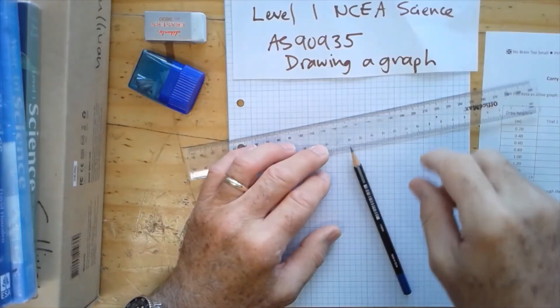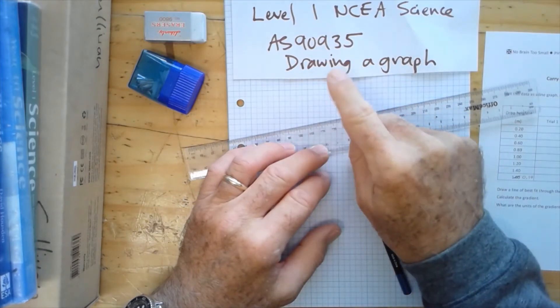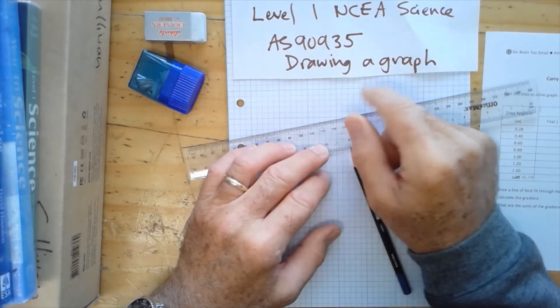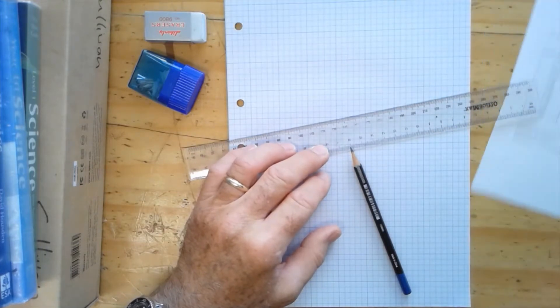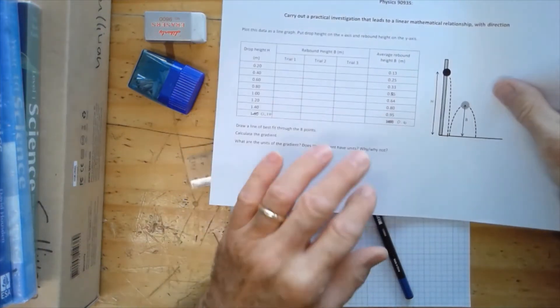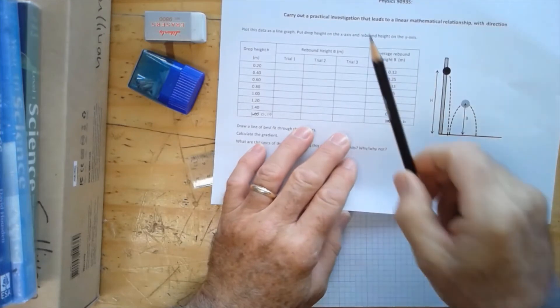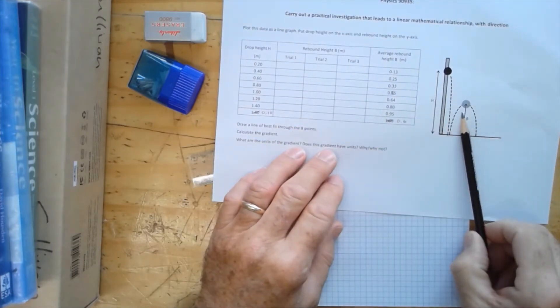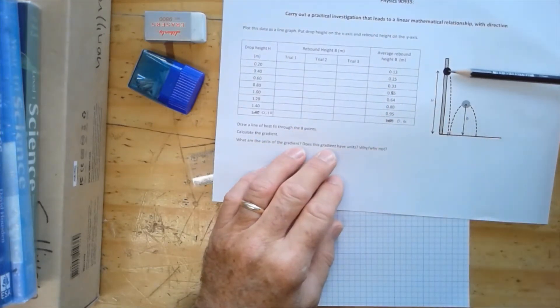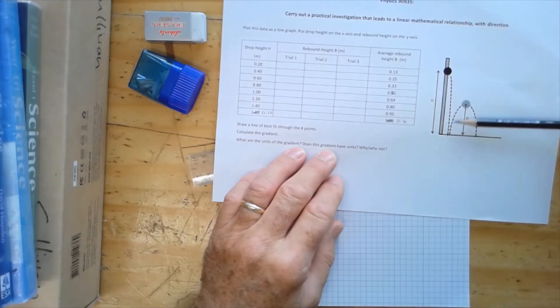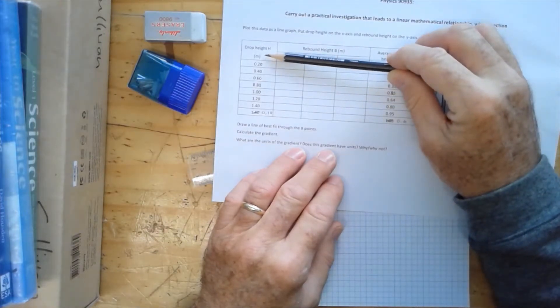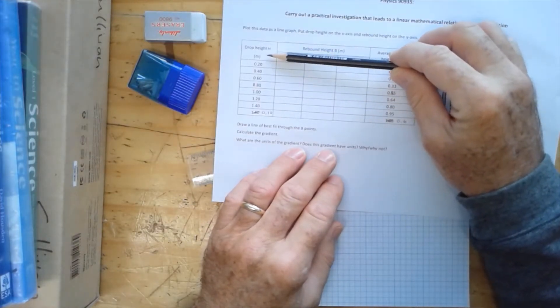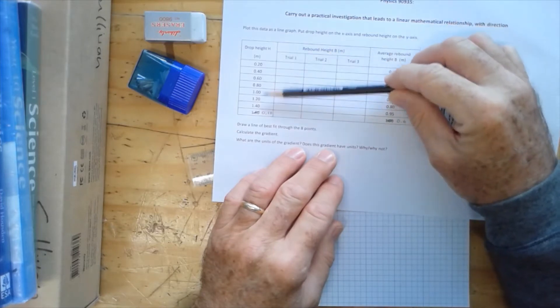This is to help AS90935 graph drawing. So we've got a graph that we need to draw from an experiment we carried out. It's the one where we bounce a ball and we consider the height that we drop it from, and we measure the rebound height. So I've got our chart here, our table, our first data table.